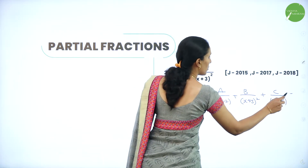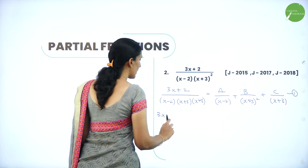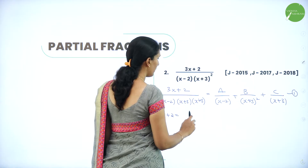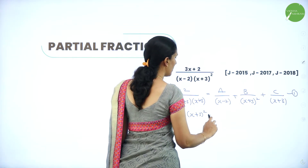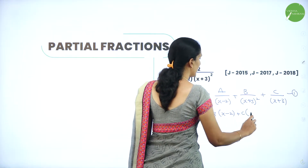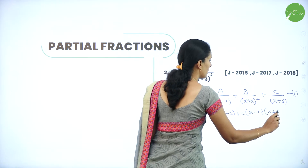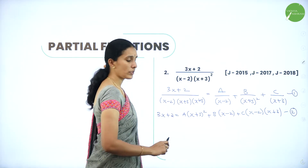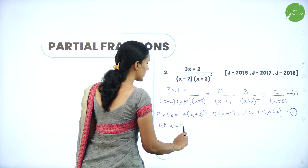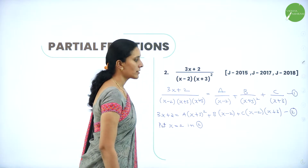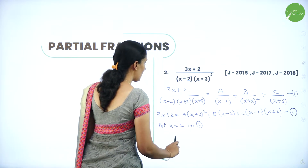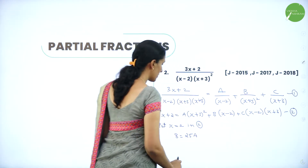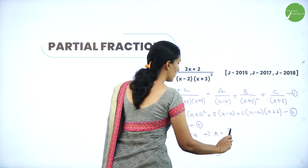Take this as equation 1. Multiplying (x−2)(x+3)² on both sides gives: 3x+2 = A(x+3)² + B(x−2) + C(x−2)(x+3). Take this as equation 2. We have two distinct factors, so equate them to zero. Put x = 2 in equation 2: 3(2)+2 = 8 = A(2+3)² = 25A. The B and C terms become zero. So A = 8/25.